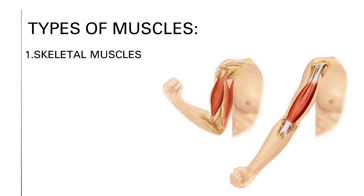Now let us understand different types of muscles. First, skeletal muscles: the two ends of each of these muscles are attached to two different bones, as you can see here. Examples of such muscles are the muscles of arms and legs. Their movements are voluntary. They are responsible for holding the bones of the skeleton together and giving shape to our body.